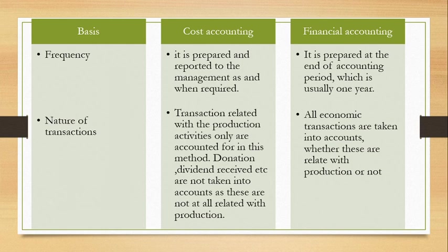The basic fundamental difference is that in cost accounting, the basic objective is cost control, so accounts are maintained with detailed analysis. In financial accounting, the basic objective is to assess the profitability and know the financial position of the company. From this perspective, financial accounting tries to improve all aspects of the company's financial picture.